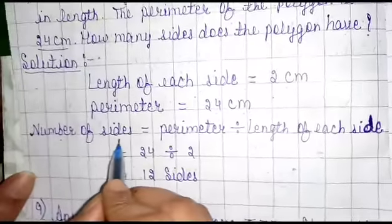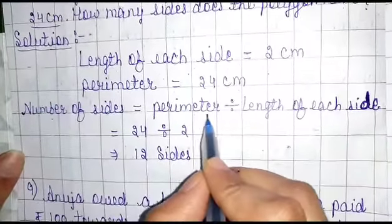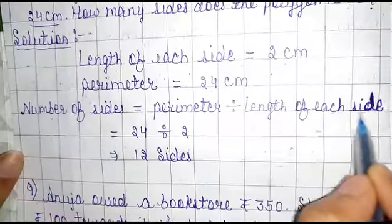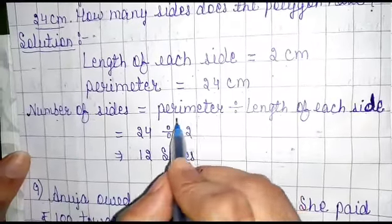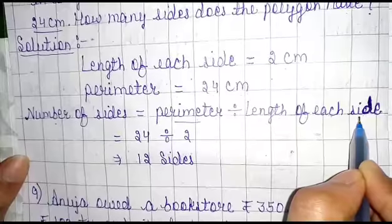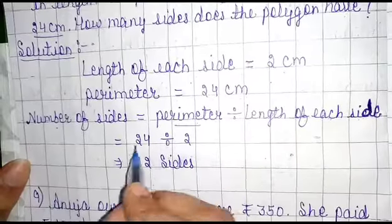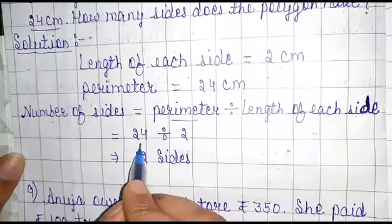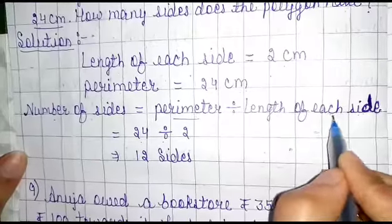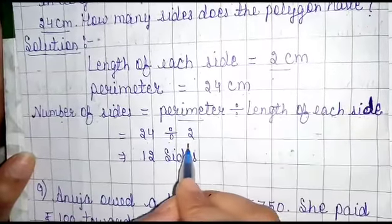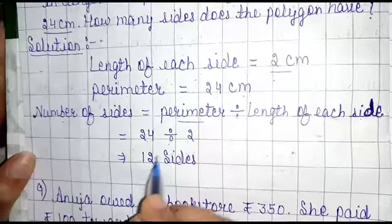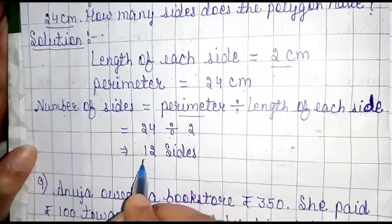Number of sides is equal to perimeter divided by length of each side. Perimeter is 24 cm and length of each side is 2 cm. So 24 divided by 2 equals 12. The polygon has 12 sides.